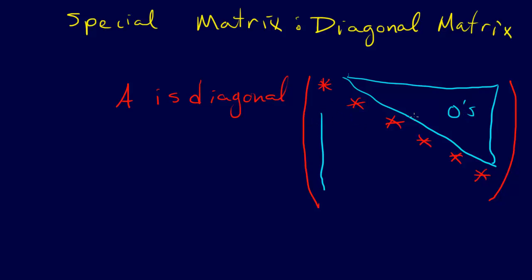Above the diagonal is called the upper diagonal, this is the diagonal, and below the diagonal. All zeros off the diagonal, that is a diagonal matrix.